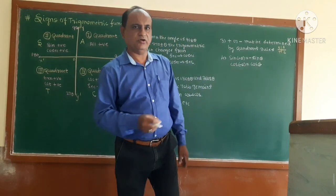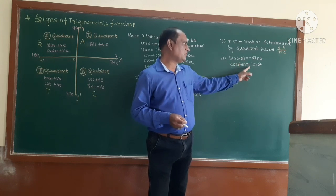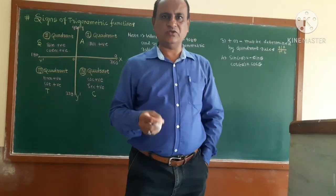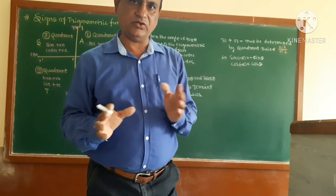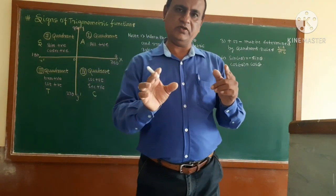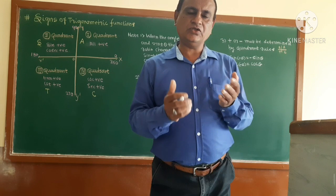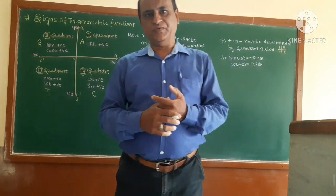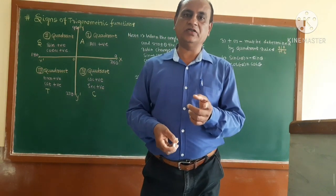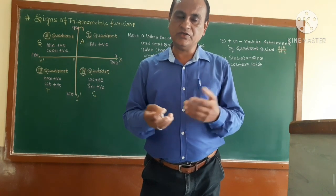Now, sin(−θ) = −sinθ, and cos(−θ) = +cosθ. These are important formulas for negative angles. Using these two formulas you can derive the remaining trigonometric functions for negative angles.